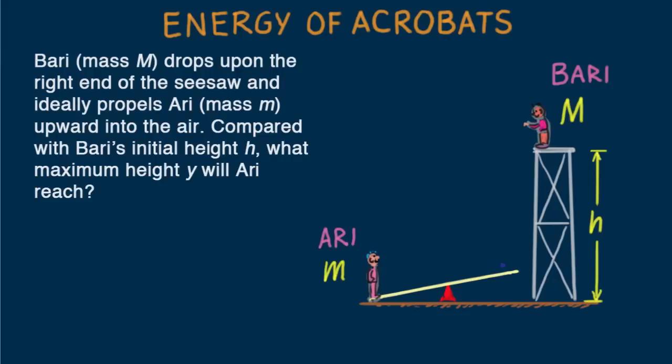Bari, mass big M, drops upon the right end of the seesaw and ideally propels Ari, mass little m, upward into the air. Compared with Bari's initial height h, what maximum height y will Ari reach?